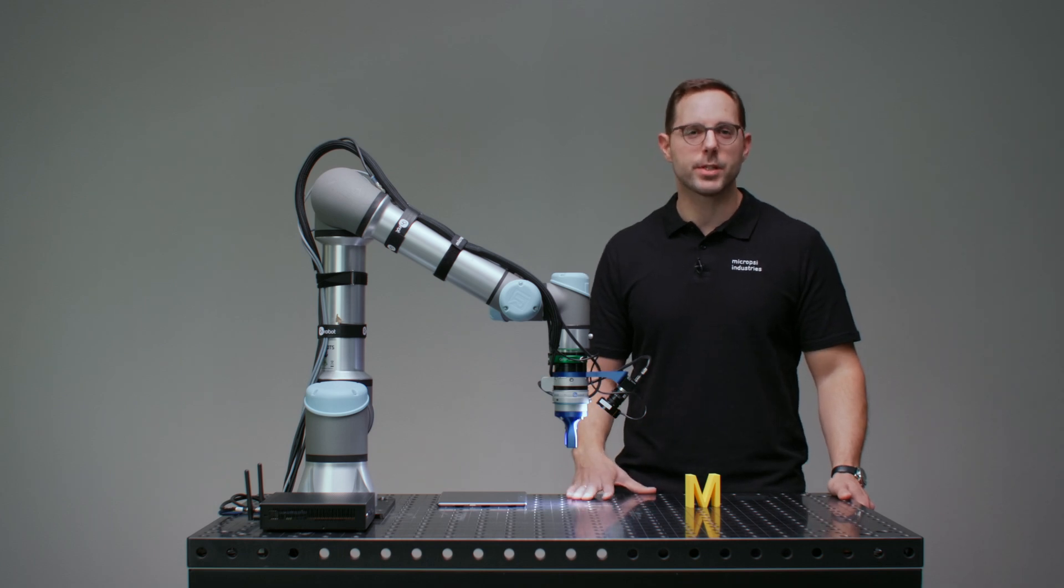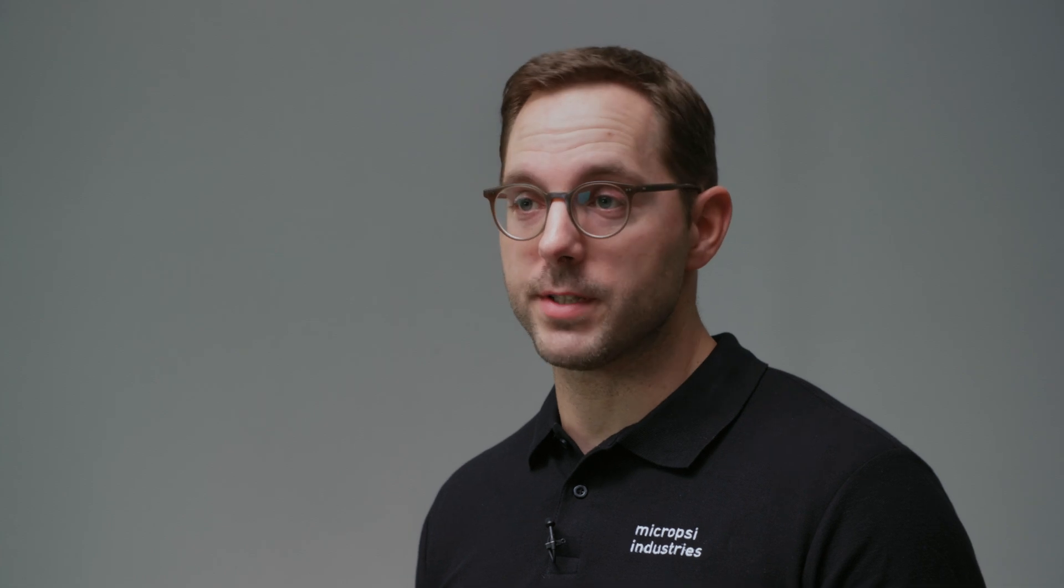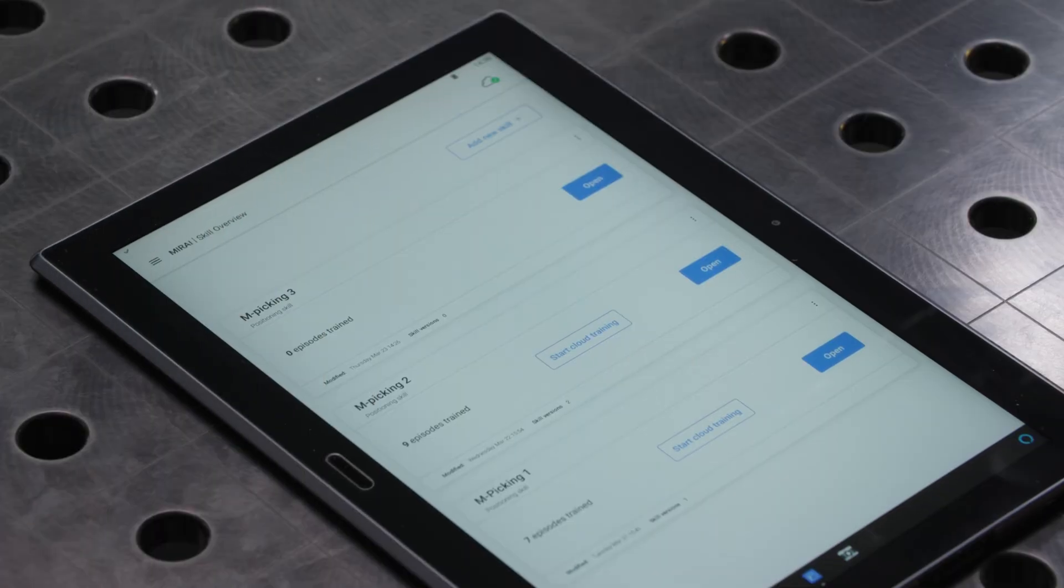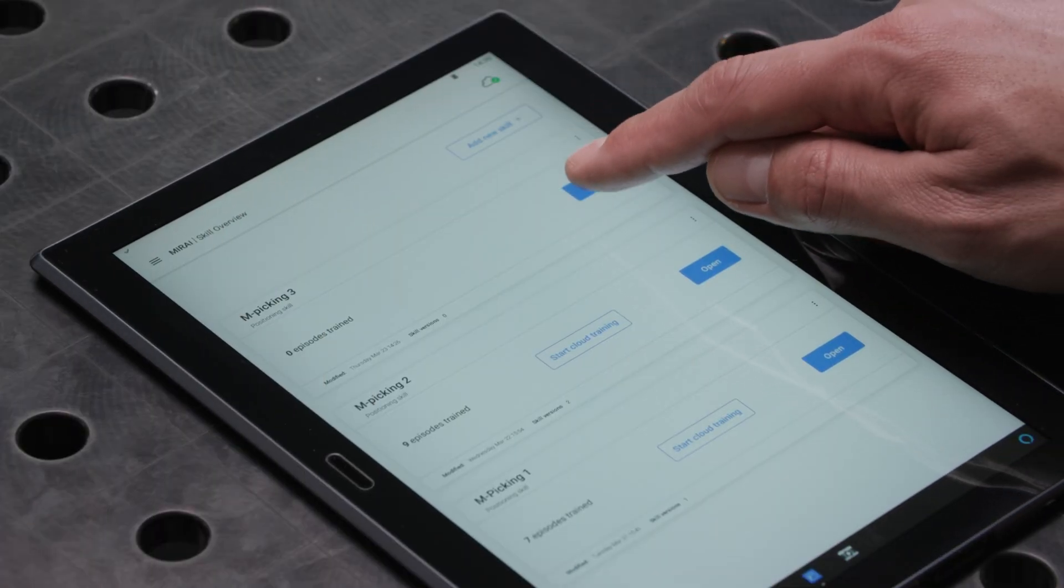You can generate a pretty robust positioning skill by recording 5 to 10 episodes, each one 30 to 60 seconds. Today, in the interest of time, we do 3 episodes. On the MIRAI training app we have already created a skill. Let's add an episode.